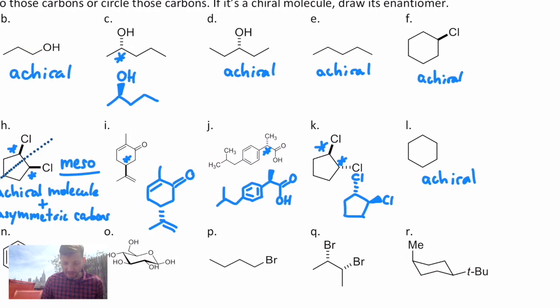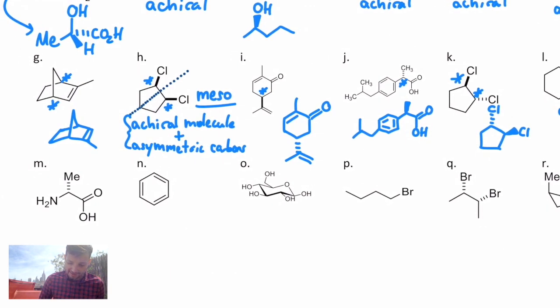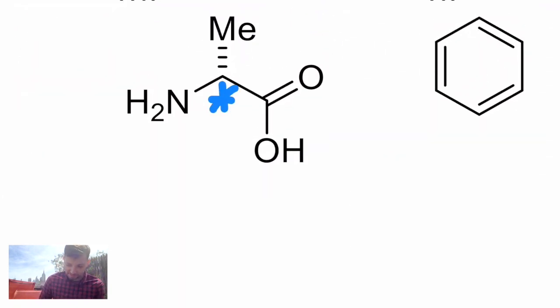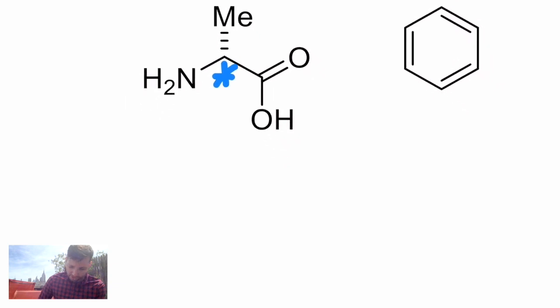No asymmetric carbons. Okay, let's wrap up and look at the last row. In M, this is an example of an amino acid. There's an asymmetric carbon right where the methyl is attached to this. I believe this is alanine. So this has an enantiomer. I will draw it by inverting the stereochemistry at the one asymmetric center and bring that methyl toward me.